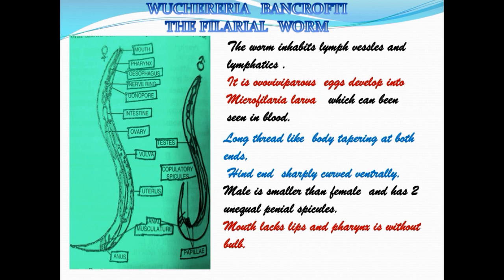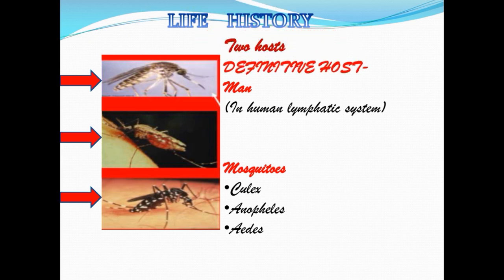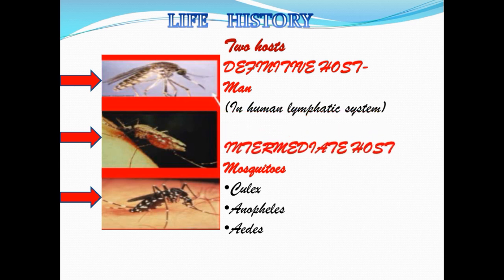In its life history, it has two hosts: the definitive host, which may be humans, and the intermediate host, which are mosquitoes of the species Culex, Anopheles, and Aedes.